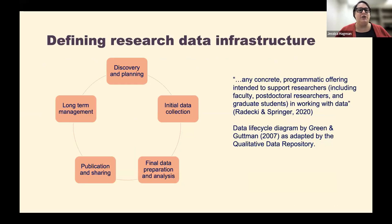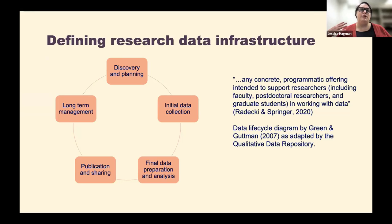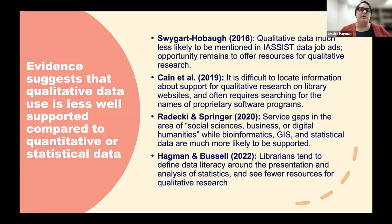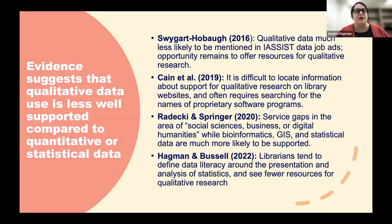In terms of research data infrastructure, we take a broad view of any sort of work that helps researchers work with data — from deciding what to do, looking for data or collecting their own, through data analysis, publication, sharing, and long-term management. We do have some evidence that data work in libraries tends to be slightly less supportive of qualitative data compared to big data, GIS data, or statistical data.